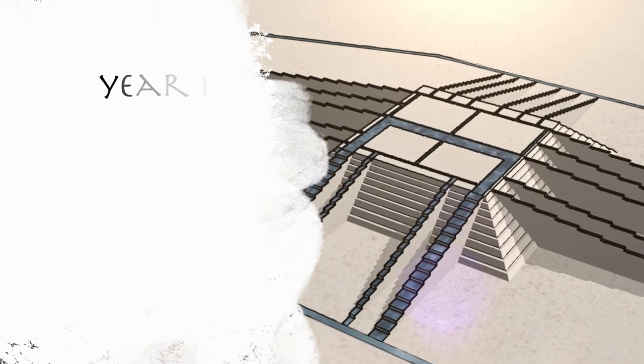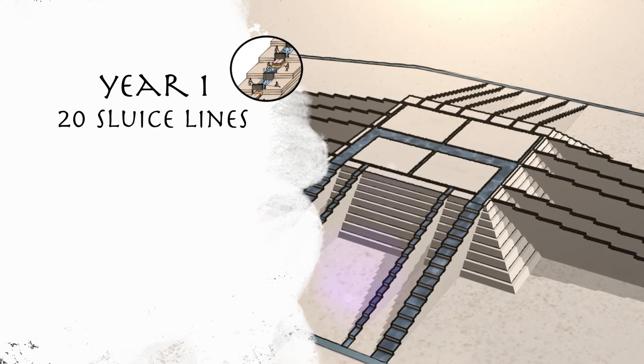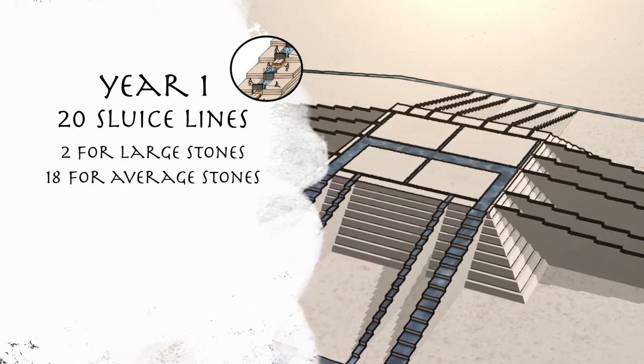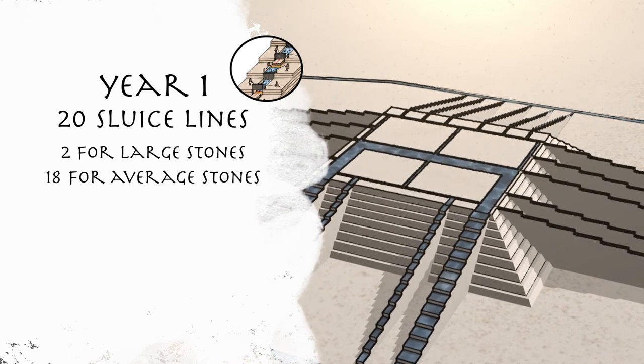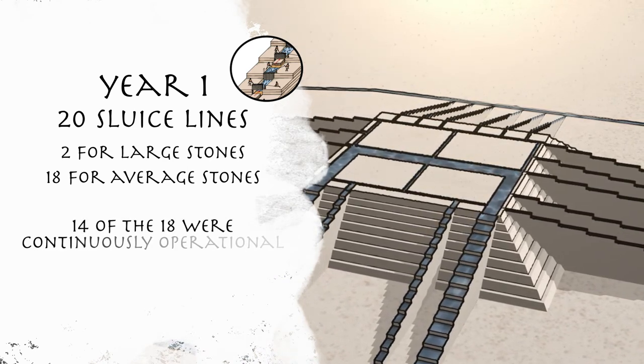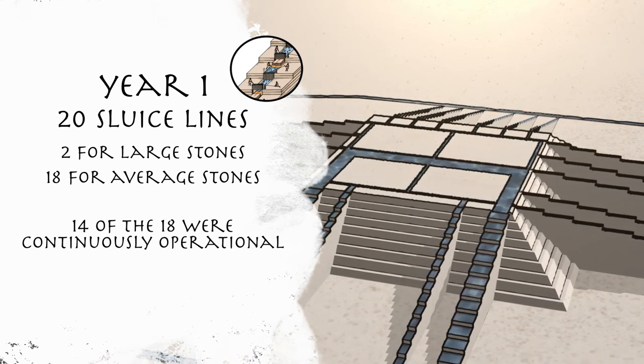In the first year of construction, the Egyptians needed 20 sluice lines extending to the pyramid's 40th layer, 2 for large stones and 18 for average stones. 14 of the 18 lines used for average stones were continuously operational, and 4 of them were interchangeably rebuilt to reach higher layers of the pyramid.